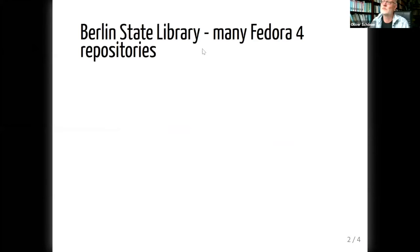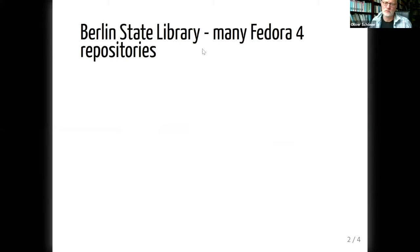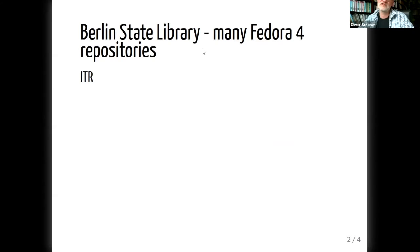In the Berlin State Library, which is a really large library, we have some — not many, but some Fedora 4 repositories for very different kinds of data. The biggest one is the ITR, from the East Asia department, containing roughly 100 million objects — not books, but individual pages. We store them individually.